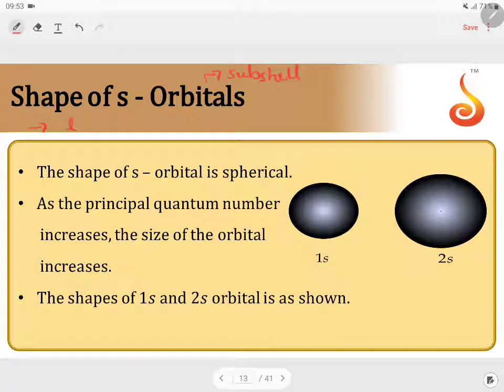The L value for S subshell will be 0. L value, i.e., azimuthal quantum number, will be 0. The minimum N value, i.e.,